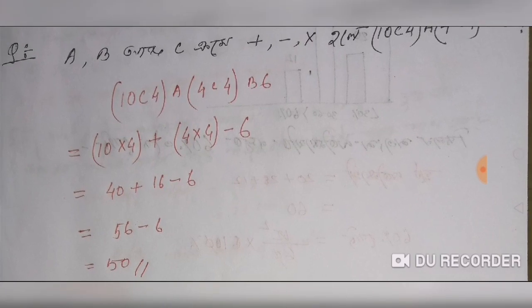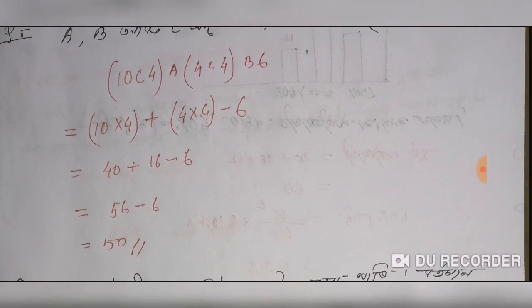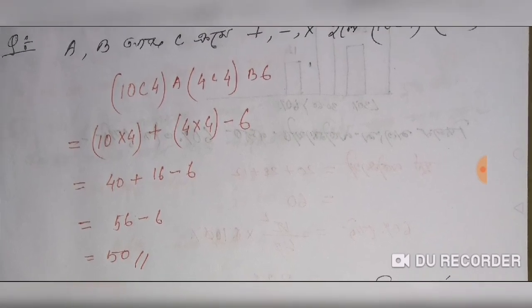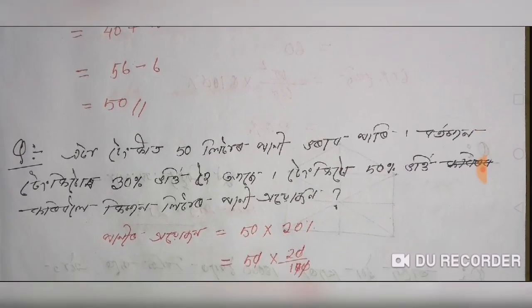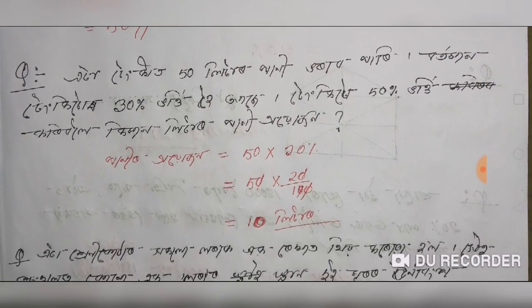10 x 4 x 4 x 6. So this calculation is 50. If you have a little bit of an option, you can see the answer is 50.